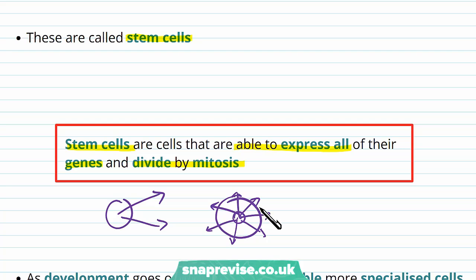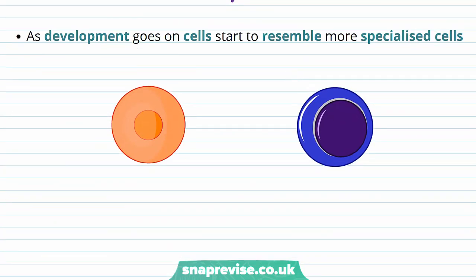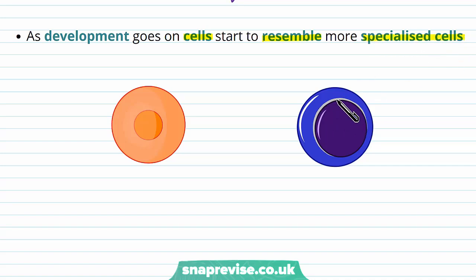So they have the potential to become anything — a nerve cell, a muscle cell, skin, liver, stomach, anything. They're right at the starting point. As the multicellular organism develops and becomes more complex, the cells start to resemble their specialized cells and start to take on their functions.